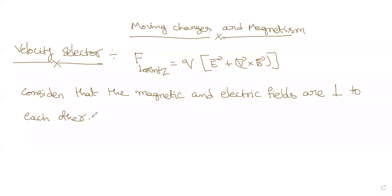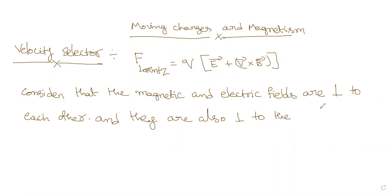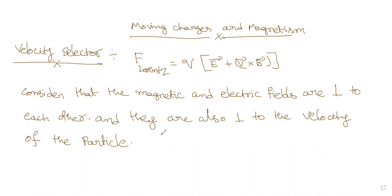Consider that the electric and magnetic fields are perpendicular to each other, and they are also perpendicular to the velocity of the particle. That is the consideration we make. Now for simplicity, please write up to here.